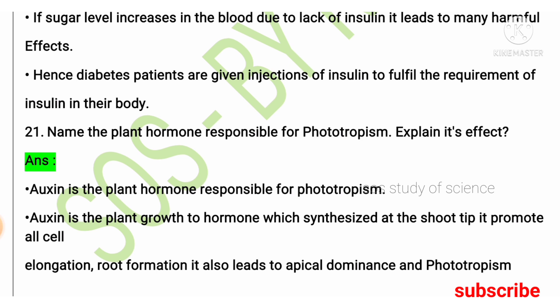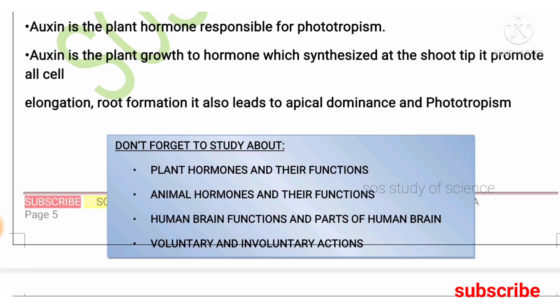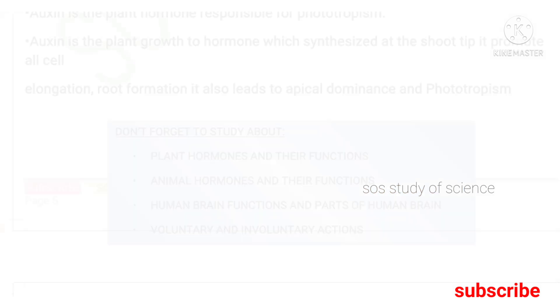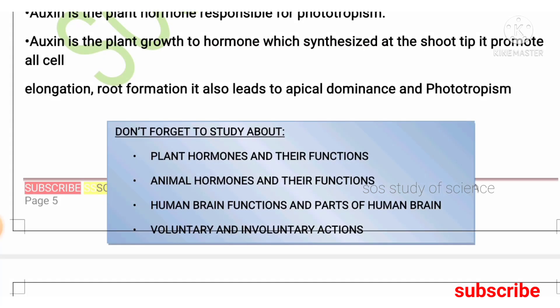I hope you found this video useful. Don't forget to study plant hormones and their functions, animal hormones and their functions, human brain functions and parts, and voluntary and involuntary actions — these are very important from an examination point of view. In video series 4, I will be discussing very important questions from the lesson Life Processes. Until then, take care and prepare well for your examination.